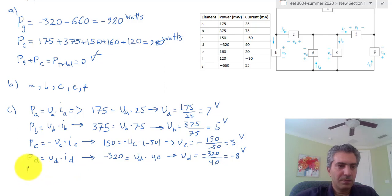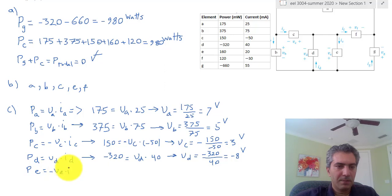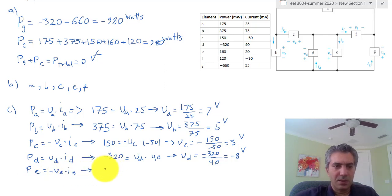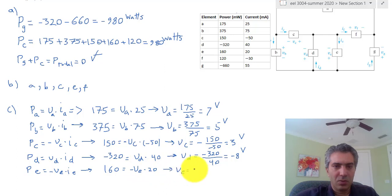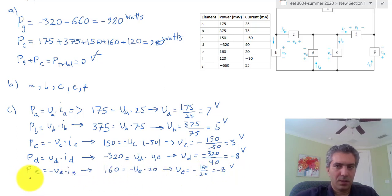For component E, the current is going into the negative terminal, so P_E = −V_E × I_E. The power is 160 W and the current is 20 A, so V_E = −160 / 20 = −8 volts.